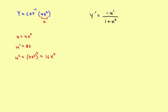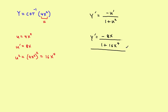Now it's just a matter of plugging that into the formula. The derivative is the negative of u prime, which is 8x, so we have negative 8x divided by 1 plus u squared, and u squared is 16x to the fourth power. So the answer is negative 8x over 1 plus 16x to the fourth. Again, fairly simple — just a matter of getting it into the formula and finding u, u prime, and u squared.